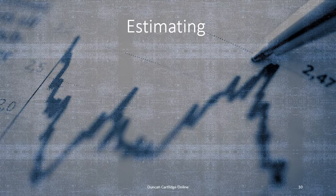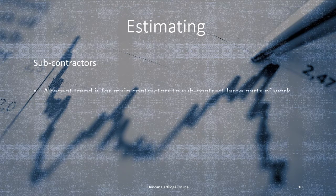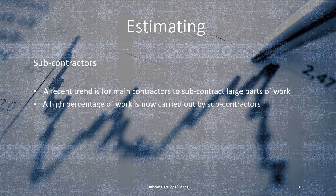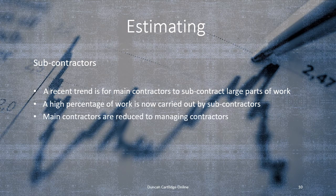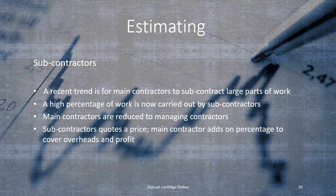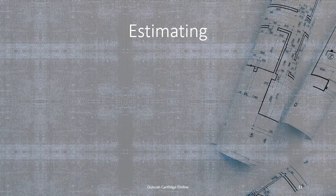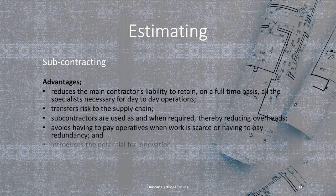During the past 20 years or so, main contractors have increasingly subcontracted trades to specialist subcontractors. The main contractor receives a quote from a subcontractor and adds a percentage to cover their profits and overheads. For a main contractor, subcontracting makes a lot of sense, as it means they can reduce the number of directly employed operatives and therefore their overheads.